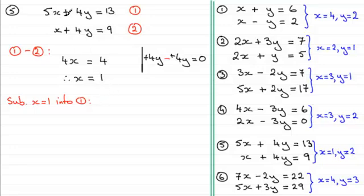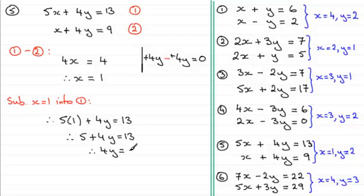So if we substitute x equals 1 into equation 1 we've got therefore 5 times 1 plus 4y equals 13. And so therefore we've got 5 plus 4y equals 13. And if I take 5 from both sides I've got 4y equals 13 take away 5 which is 8. Divide both sides now by 4 and you end up with y equals 8 divided by 4 which is 2.